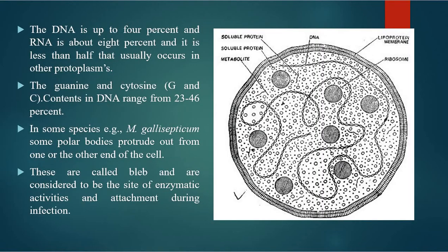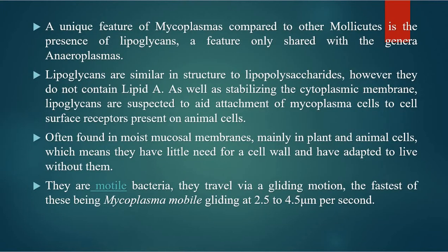A unique feature of mycoplasma compared to other Mollicutes is the presence of lipoglycans, a feature only shared with the genus Acholeplasma. Lipoglycans are similar in structure to lipopolysaccharides, however they do not contain lipid A. As well as stabilizing the cytoplasmic membrane, lipoglycans are suspected to aid attachment of mycoplasma cells to surface receptors on animal cells. Often found in moist mucosal membranes mainly in plant and animal cells, they have little need for a cell wall and have adapted to live without one. They are motile bacteria that travel by a gliding motion, the fastest being Mycoplasma mobile, gliding at 2.5 to 4.5 millimicrons per second.